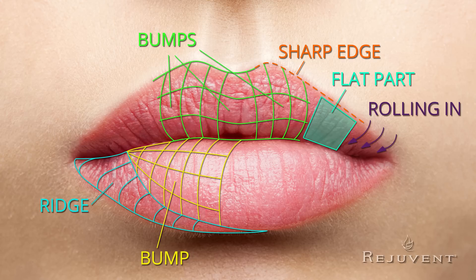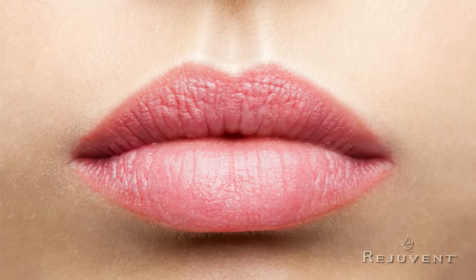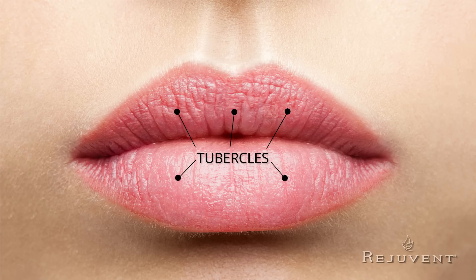The upper lip has three central bumps, and they can vary in size. In some patients, the central one is larger and the two on either side are smaller. In others, the two just lateral to midline are larger and the central one is smaller. In the lower lip, there are two large midline bumps that comprise roughly the central two-thirds. Using medical terminology, the three central bumps of the upper lip are called tubercles, and the lower lip bumps are also called tubercles — three in the upper lip and two in the lower.